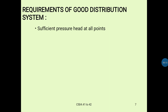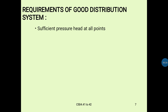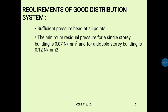Sufficient pressure head at all points. The pipe at every point should have sufficient pressure. The minimum residual pressure for a single-story building is 0.07 N per mm², and for a double-story building it is 0.12 N per mm². For a single-story building, I am going to provide pressure of 0.07 N per mm².